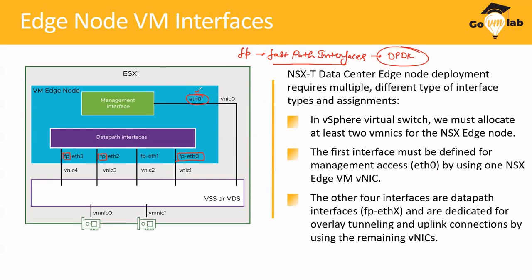The management interface carries management traffic — you log in using that IP and the NSX Edge Node appears. But the FastPath interfaces carry NSX traffic, which needs to be high-speed, high-performance. These interfaces are designed for faster processing, with underlying Intel implementation where CPU processing happens much faster than generic packets. That is why we call them FastPath interfaces.